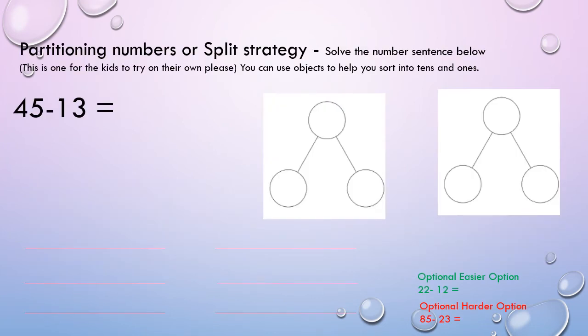Partitioning numbers or split strategy. We're going to model this. So solve the number sentence below. This is again another one for the kids to try on their own without any help. Use these objects to help you sort into tens and ones. So I've modeled this before for you. The main question is 45 minus 13 equals. That's the one that I've got there for you. However, if you want an easier option, that's no problem. You can go and do 22 minus 12 and use the templates there provided for you.